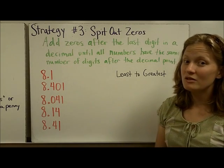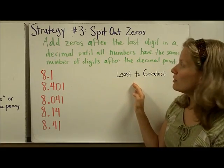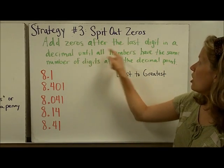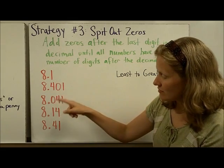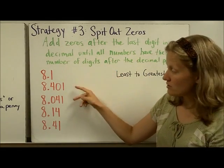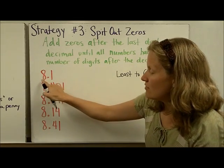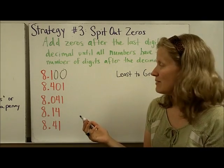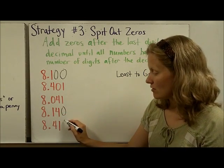The final strategy is especially useful when you have a long list of numbers to order from least to greatest or greatest to least. I call it 'spit out the zeros.' You add zeros after the last digit in a decimal until all numbers have the same number of digits after the decimal point. Here I have one digit, three digits, and two digits after the decimal point. Since the most is three, I need to make them all have three digits after the decimal. Eight and one-tenth is the same as eight and one hundred thousandths — they're worth the same amount. I spit out zeros as needed so all numbers have three decimal places.